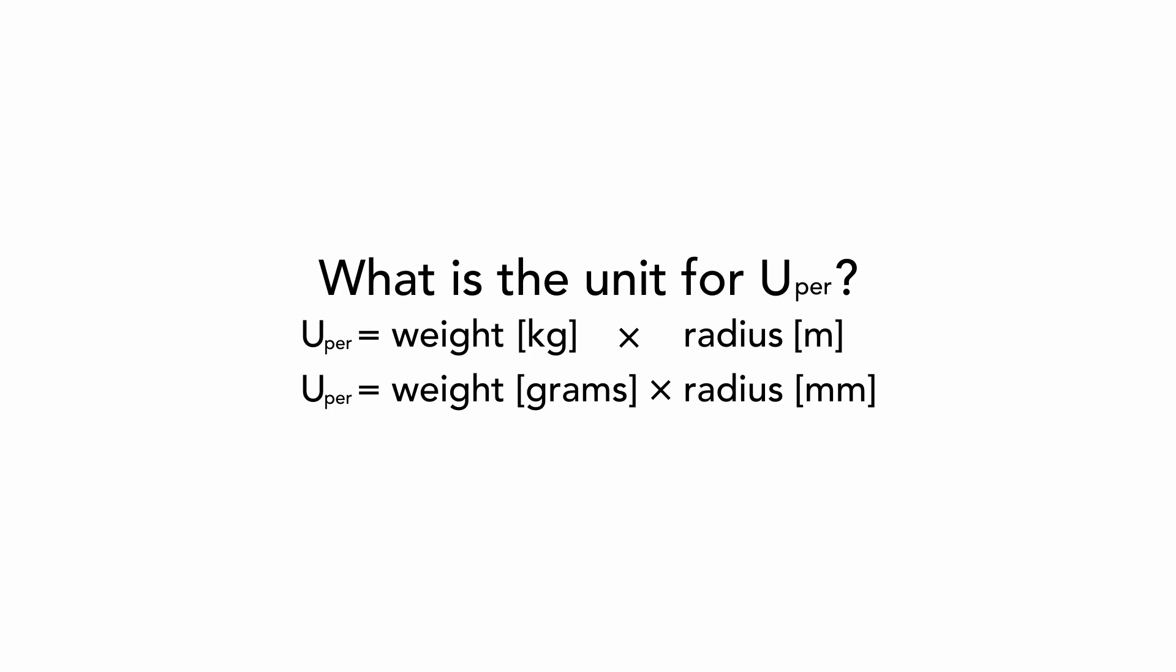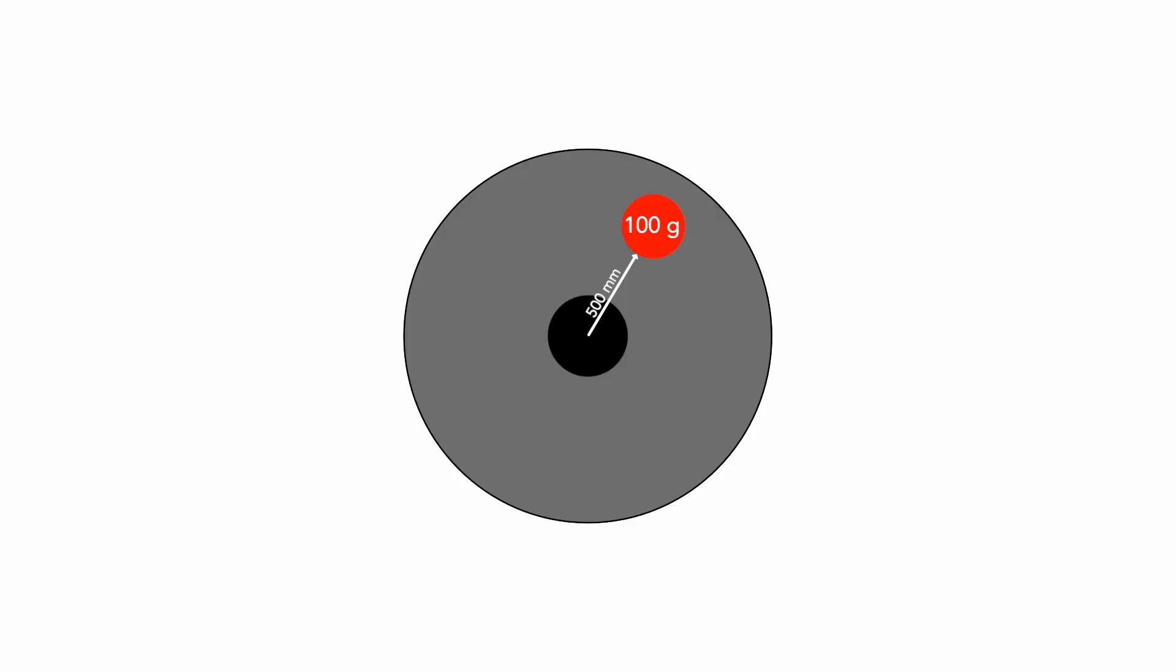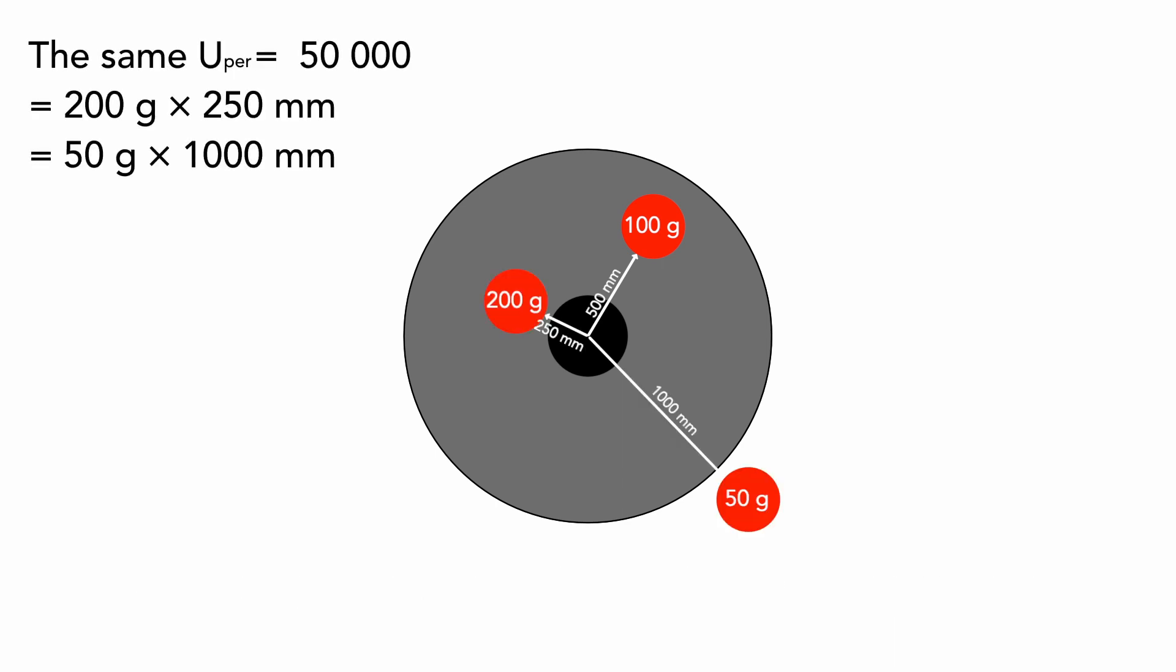It describes the heavy spot. It tells us that a specific mass is mounted on a specific radius. On the picture you can see the rotor. Here is the heavy spot mass 100 grams. The radius is 500 millimeters. The U-per is equal 100 times 500. It is 50 thousand gram millimeters. Note that the same value of U-per we get with 200 grams on 250 millimeters or 50 grams on 1000 millimeters.